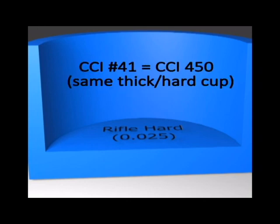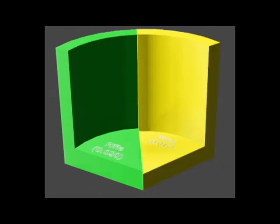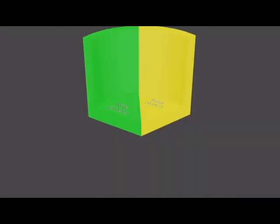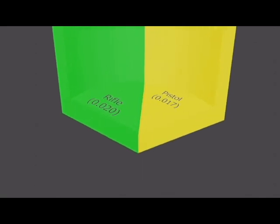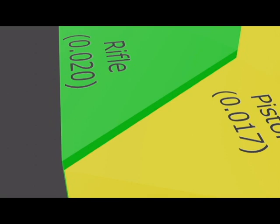With the CCI or Federal number 41s, the cup alloy is made of a slightly harder material. Let me talk about the bottoms for just a little bit, and get rid of this hard rifle primer for a minute. Let's zoom in to compare the thicknesses of the pistol and rifle cup bottoms. Now I tried to draw these two primer cup bottoms to scale, but you can see that yes, there is some differences between the pistol and rifle, but the differences aren't really appreciable.